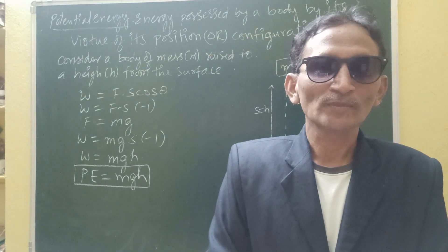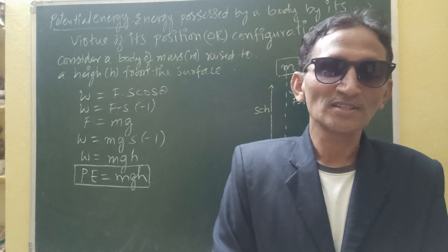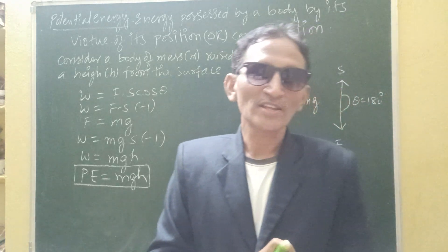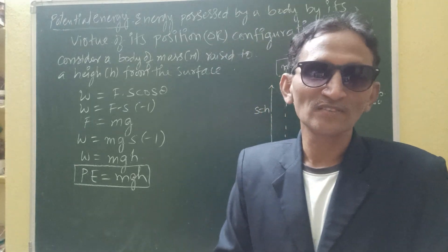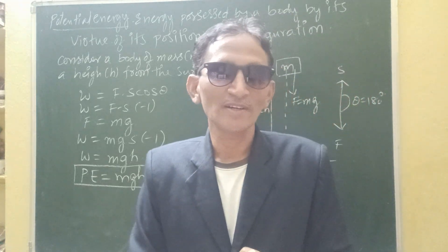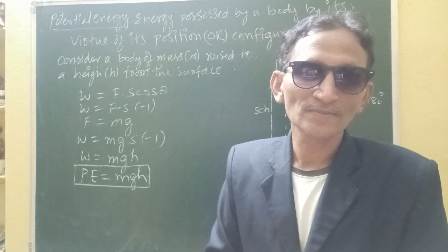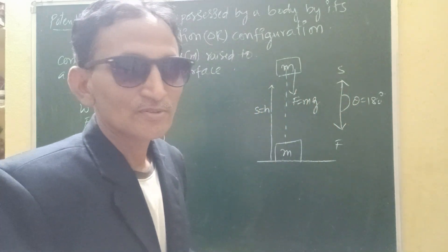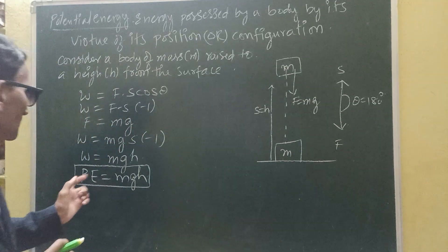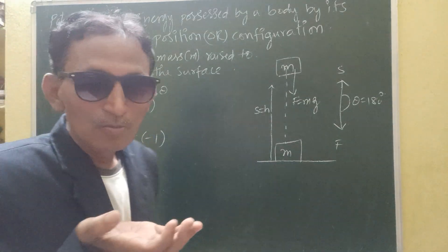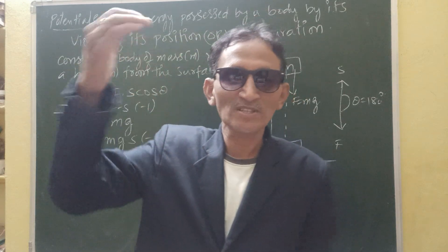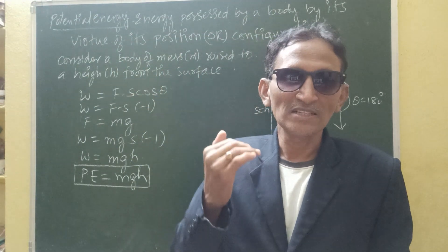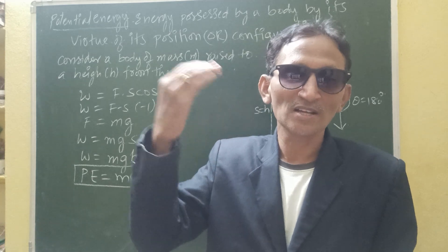Potential Energy = mgh. The units of potential energy are the same as that of work — Joule in the MKS or SI system, and erg in the CGS system. This potential energy depends upon the height. How much height you are raising the body, that much potential energy will be increased. As the height goes on changing, the potential energy also changes.